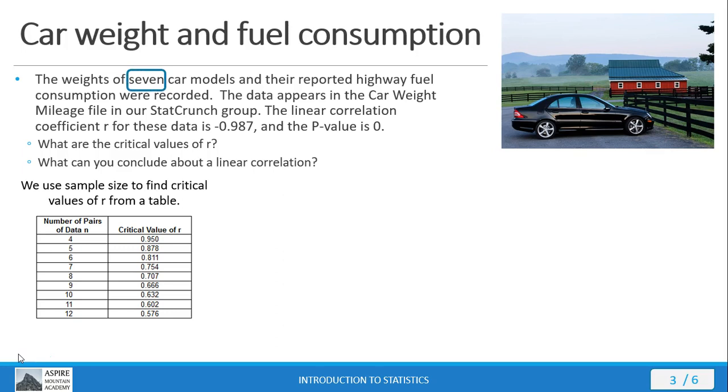Our problem statement says we have seven pairs of data, so our sample size is seven. We look in the table and find that value right here. Then we just look across the same row in the other column and there's our critical R value: 0.754.